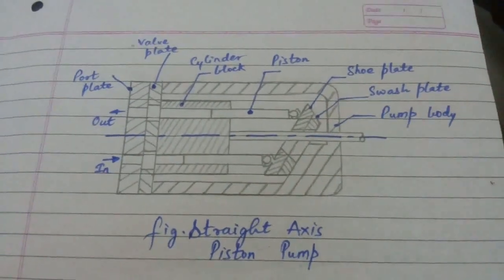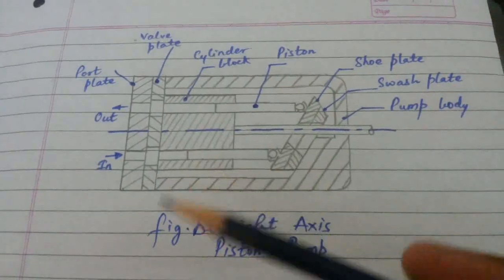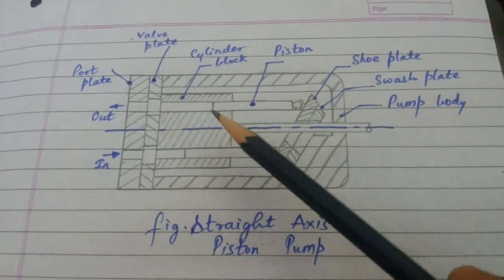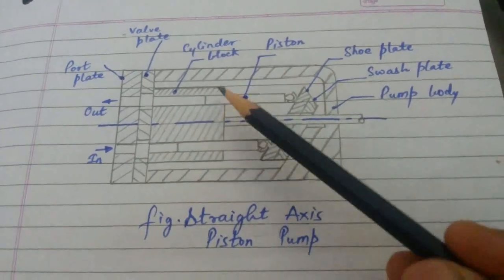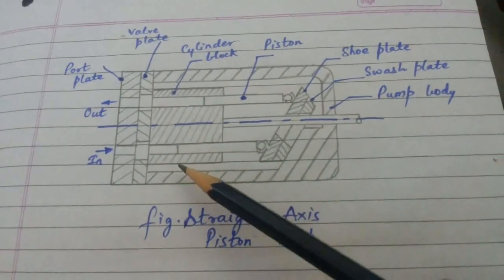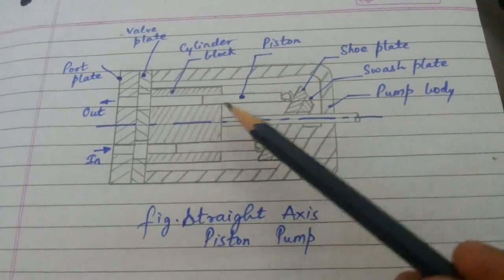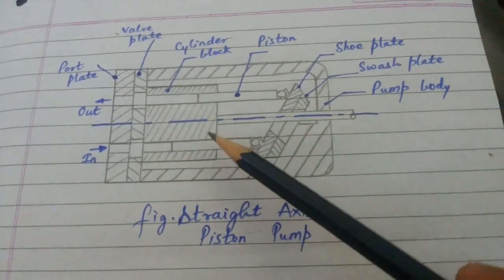So Straight Axis Piston Pump. It consists of a cylindrical block as you can see over here, there is a cylindrical block with the axial bore. It has axial bore.